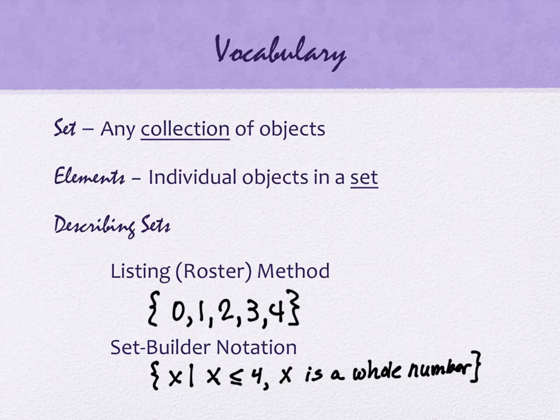So admittedly, this is a lot more to write, and in this particular context, it seems rather unnecessary, and it is. But there are sets for which it's going to be more useful. Let me show you how this is read. The curly braces in either case are representing sets. Sets reside inside of a curly brace. All the elements reside inside of a curly brace. We read this X such that X is less than or equal to 4, which that list it is, right? X is a whole number. Whole numbers start with 0 and then go up. Don't include negatives, no fractions, no decimals.